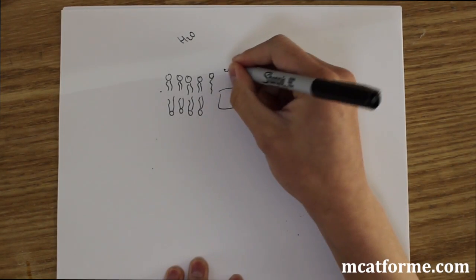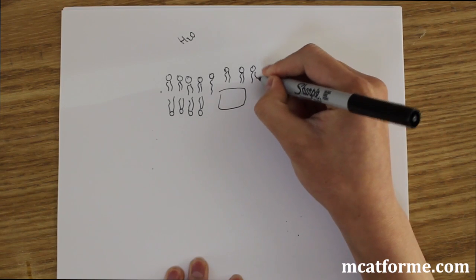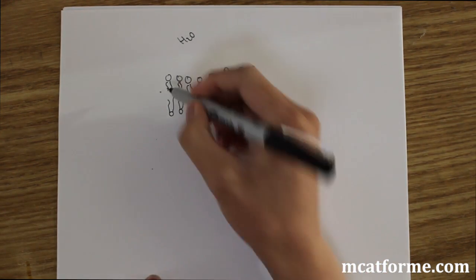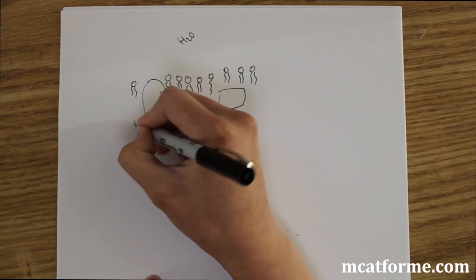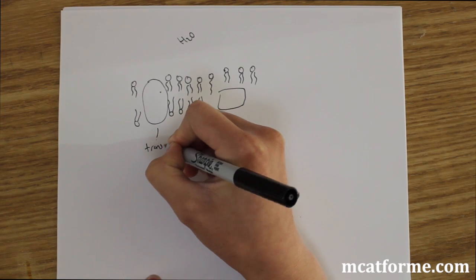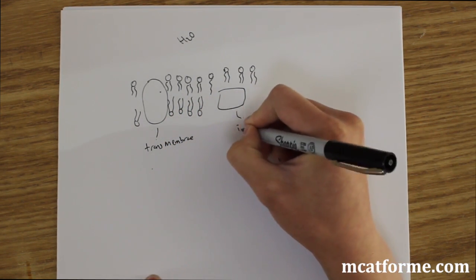But we can also have these proteins like this. So we can have these proteins like this. And we can also have proteins that go the full amount like that. So this would be called a transmembrane protein. And this is called an integral membrane protein.